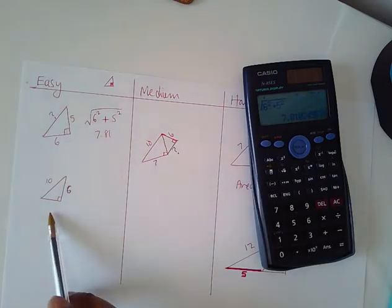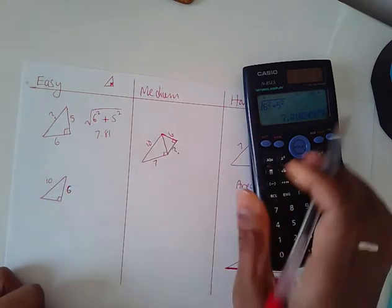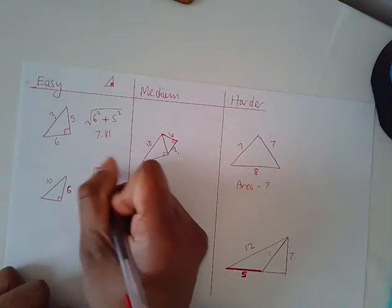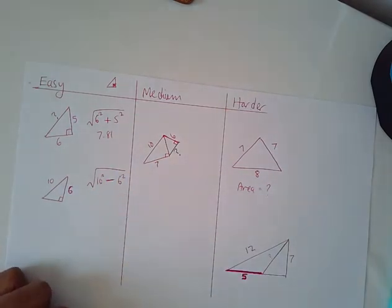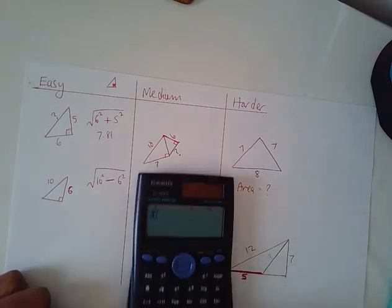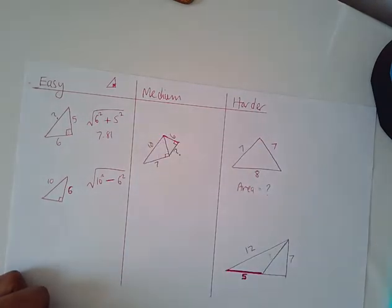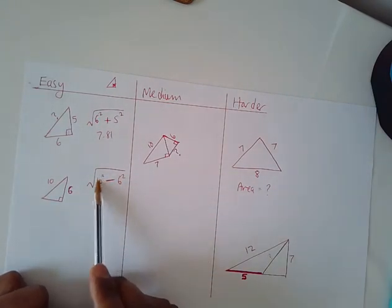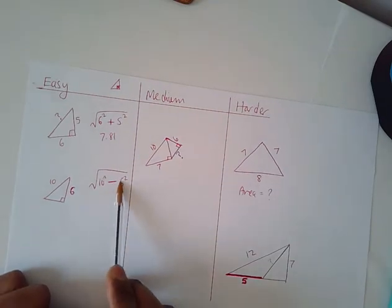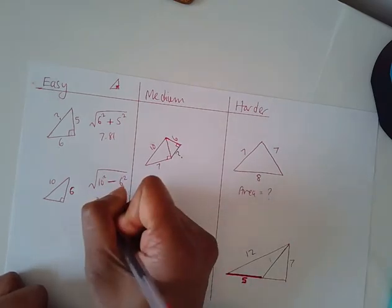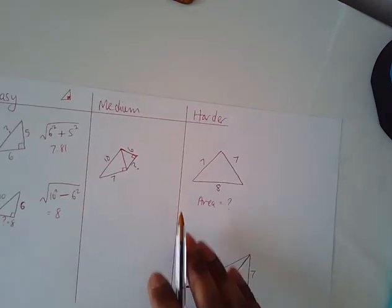This is a slightly different situation where the longest side is given and one of the shorter sides is missing. Since a shorter side is missing, it will be a takeaway in your calculation. Big number first: 10 squared minus 6 squared. 10 squared is 100, 6 squared is 36, 100 take away 36 is 64, and the square root of 64 is 8. So the missing side is 8. These are the easy type of questions — it gets a little trickier now.